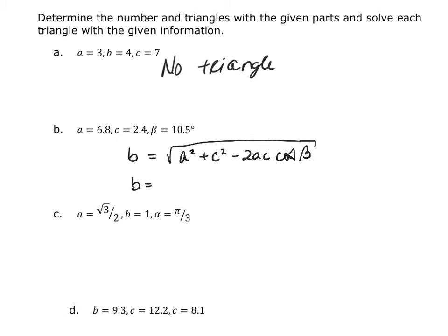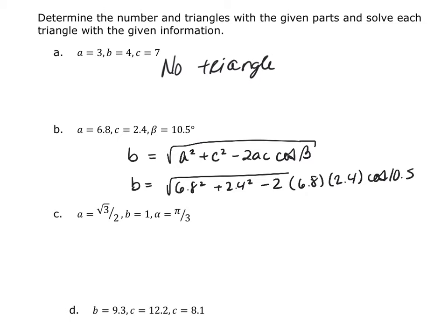So B is equal to the square root of 6.8 squared plus 2.4 squared minus 2 times 6.8 times 2.4 times the cosine of 10.5 degrees. Make sure you are in degrees because my units are given in degrees. So I end up with B being 4.46.